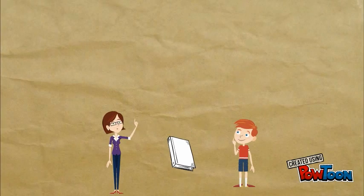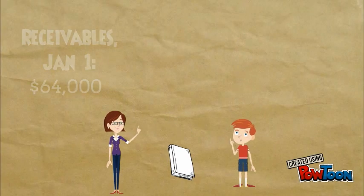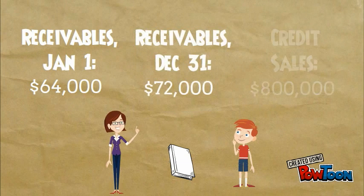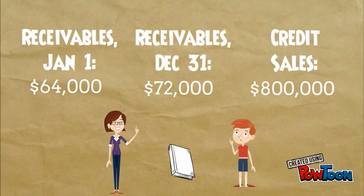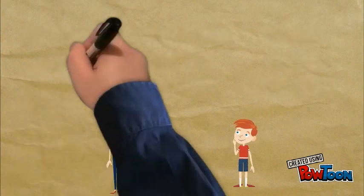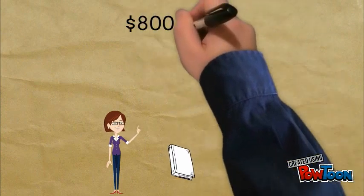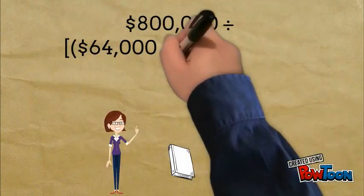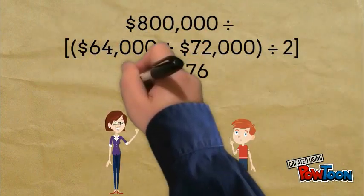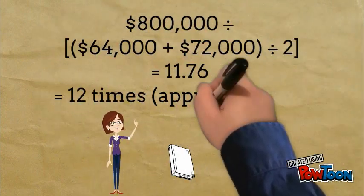For example, for the year ending December 2016, Educare had the following figures on their financial statements. Substitute these figures into the formula and we see that Educare turns over its receivables approximately 12 times each period.